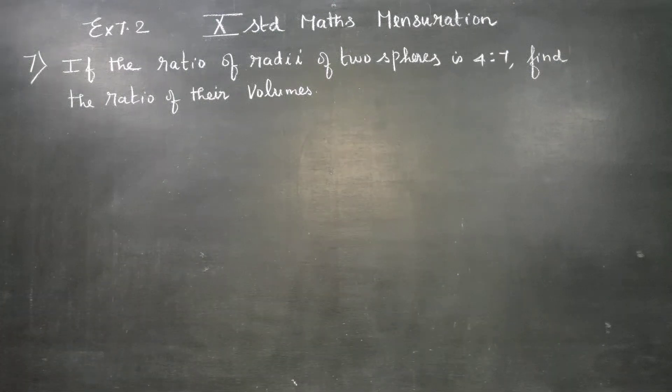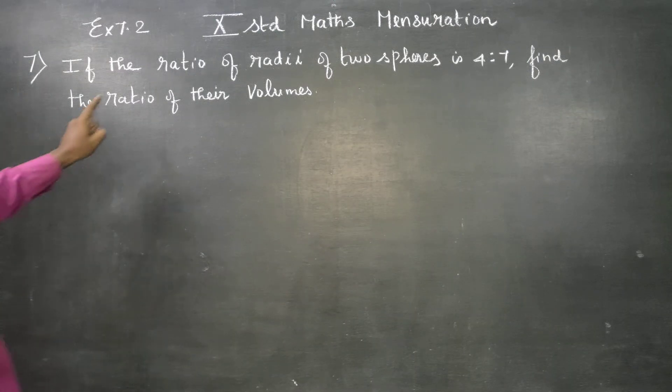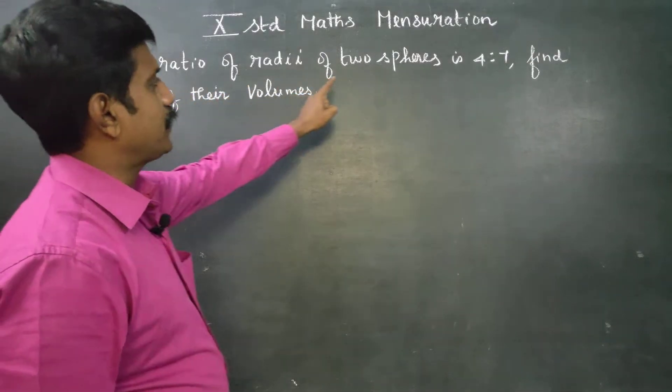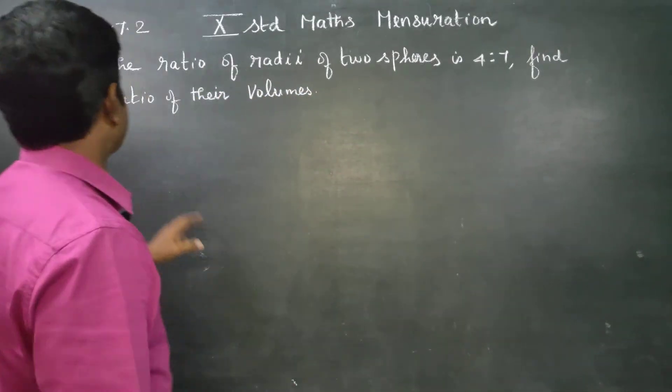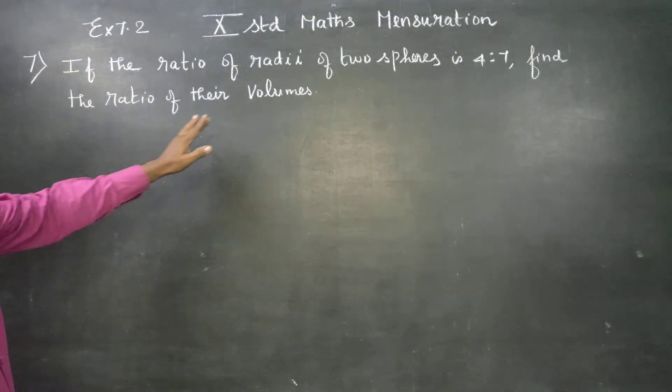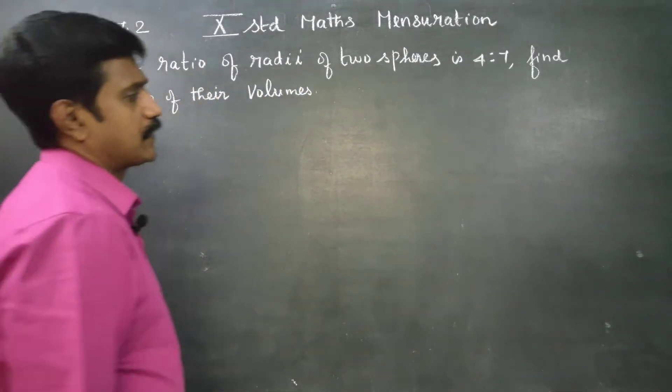Dear 10th Standard Students, in Exercise No. 7.2, Sum No. 7: If the ratio of the radii of two spheres is 4 is to 7, find the ratio of their volumes.